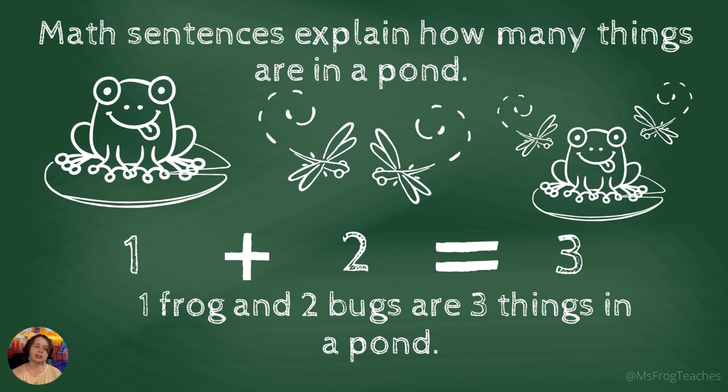So for example, a math sentence explains how many things are in a pond. One frog, two bugs, or three things in the pond. For a math sentence, that would be one plus two equals three.